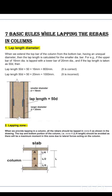Rule 1 is lap length diameter. When we extend the top bar of a column from the bottom bar having an unequal diameter, the lap length is calculated for the smaller diameter. For example, if the upper bar is 16mm diameter and is lapped with a lower bar of 20mm diameter, and the lap length is taken as 50 times the diameter, then the correct lap length is 50 × 16mm = 800mm. Using 50 × 20mm = 1000mm would be incorrect.